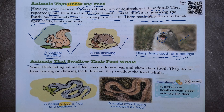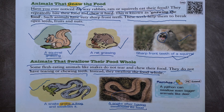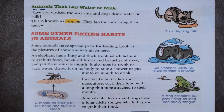Some flesh-eating animals like snakes do not tear and chew their food. They do not have tearing or chewing teeth — instead, they swallow the food whole. A snake grabs a frog and swallows it. A python can swallow even bigger animals like deer.